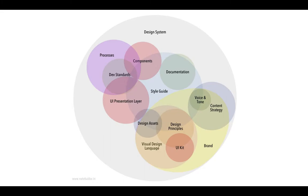Each of those circles is an artifact, and the team made that artifact — whether it's the UI kit, the component library, the documentation. A lot of people don't think about content strategy as part of a design system, but it definitely is. And if you kind of squint your eyes and look at this just right, it kind of starts to resemble an org chart.